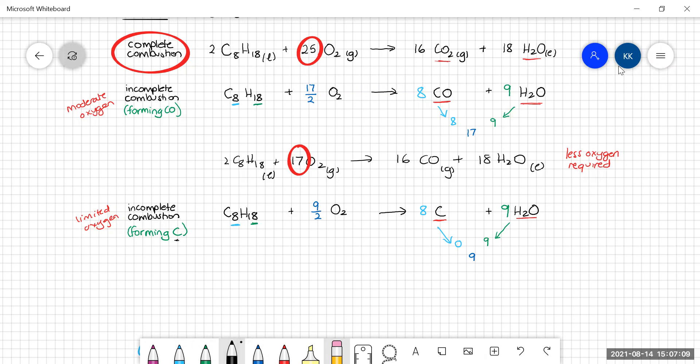Again, multiplying throughout by two, we get two octanes, C8H18, plus nine oxygens producing 16 carbons and 18 waters. Putting in the states: liquid, oxygen is a gas, carbon, the soot is a solid, and water is a liquid.